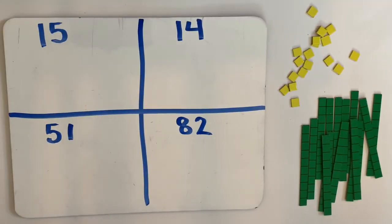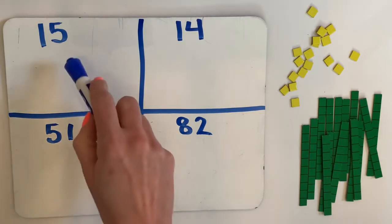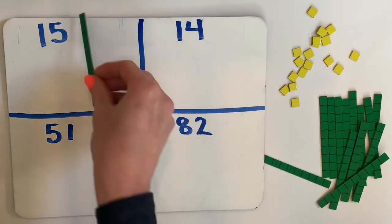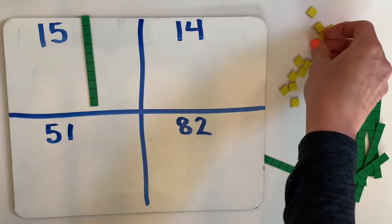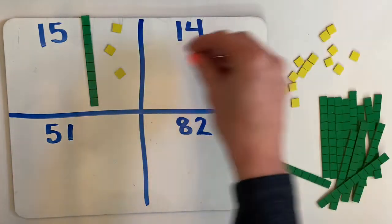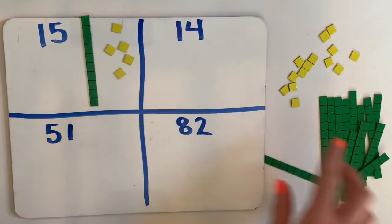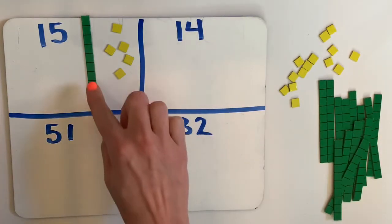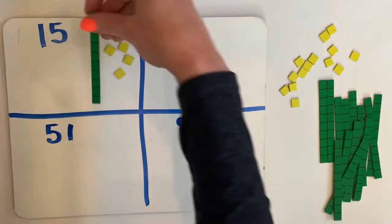I've got four numbers for you here. 15, 14, 51, and 82. So if I were to make 15, it'll be one base 10 or one 10 rod and five ones. However, I know that you don't have these at home.